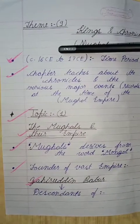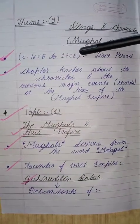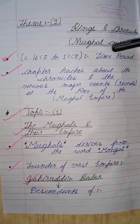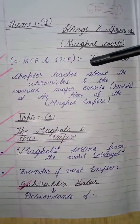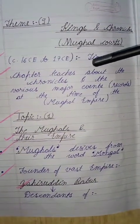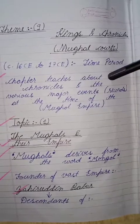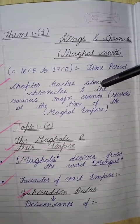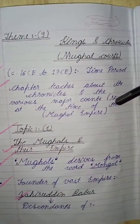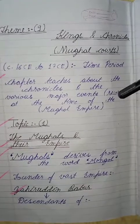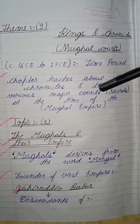The time period is from the 16th century to the 17th century. So let's see what this chapter teaches us. It teaches us about the chronicles and the various major events or records at the time of the Mughal Empire and the Mughal Code.